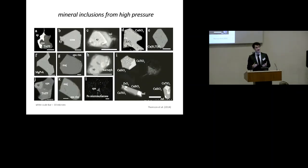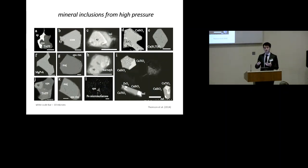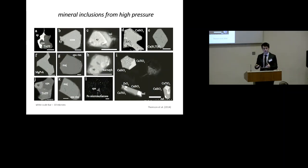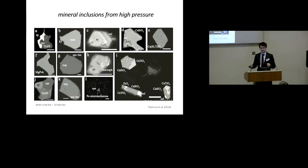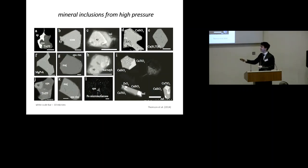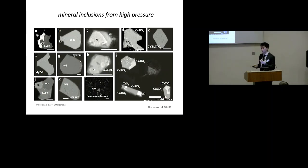Here are backscatter electron images of several inclusions. In a backscatter electron image, the brightness of grayscale corresponds proportionally to the density of the material being imaged - brighter colours mean heavier elements such as iron, whereas less bright colours indicate magnesium or silicon. The scale bar in each image is 10 microns, so these inclusions are only 20 to 50 microns in diameter - very tiny. You can see a wide variety of types, and they are all polyphase inclusions.